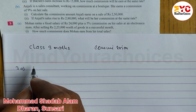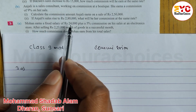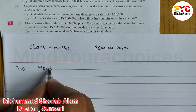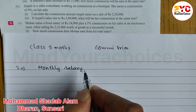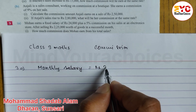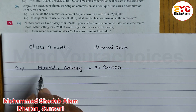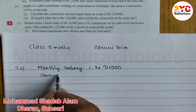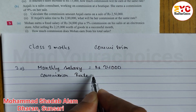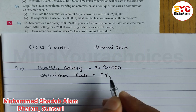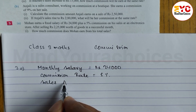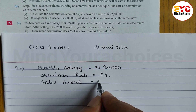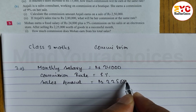Here, monthly salary we can write down. Monthly salary is equal to Rs. 24,000. After that, commission rate — or rate of commission — is 5%. Total sales, or sales amount, is equal to Rs. 2,25,000.